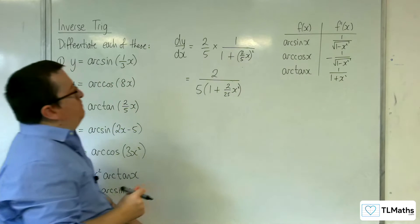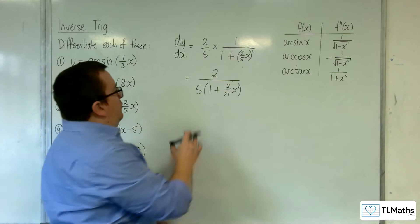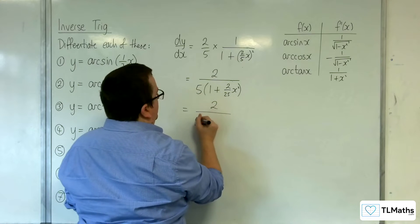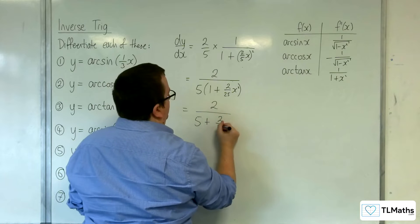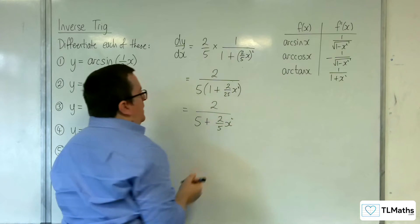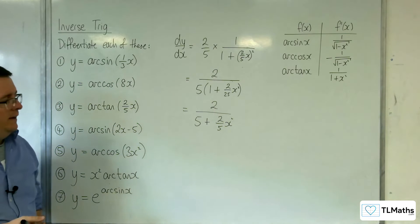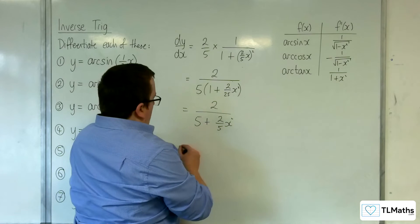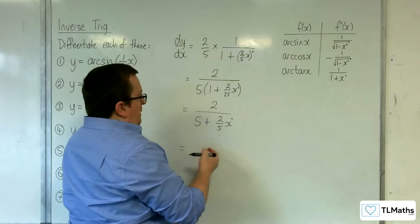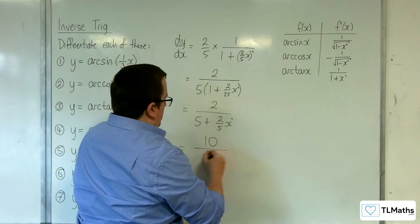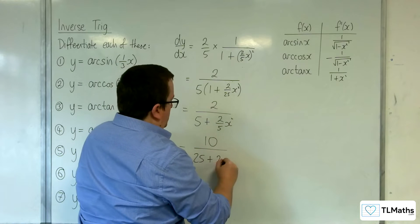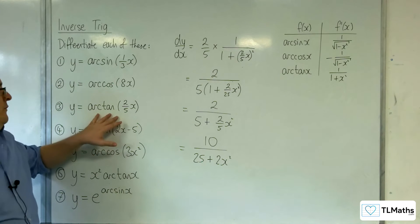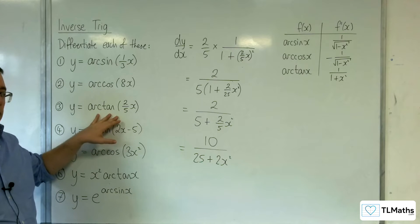Let's multiply through by the five in the denominator to clear the nested fraction. So two over five plus two fifths x squared — multiplying the top by five gives us ten over twenty-five plus two x squared as the derivative of arc tan of two fifths x.